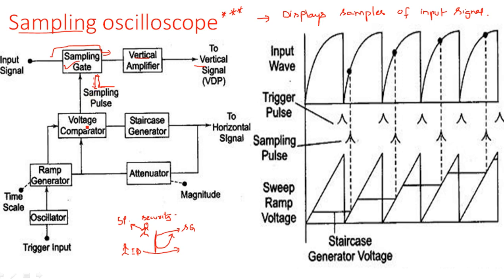To generate a sampling pulse, we use a voltage comparator, a ramp generator, a staircase generator, and an oscillator. The staircase generator generates a staircase signal; the ramp generator generates a ramp signal. The oscillator generates a sawtooth waveform. The trigger input changes the state of the oscillator — whenever the trigger pulse occurs, the ramp resets to zero, and the next cycle begins.